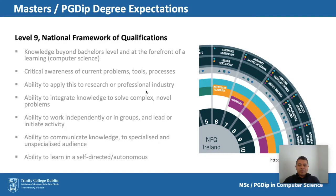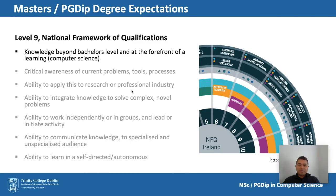All courses in Ireland follow the definitions in the National Framework of Qualifications of Ireland. Under this framework, the MSc or PG Dip fall under the category of a Level 9 award. Students completing a Level 9 award should be assumed to have knowledge beyond the bachelor's level and at the forefront of some field of learning — in this case computer science. They should be expert and have critical awareness of current problems in the area, the tools and the processes involved.